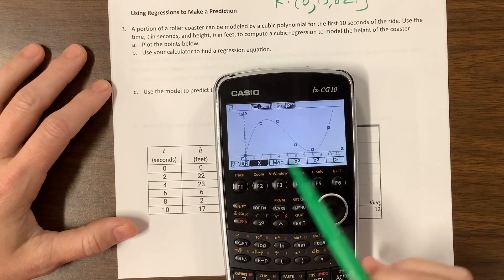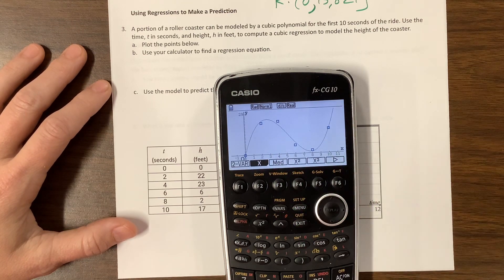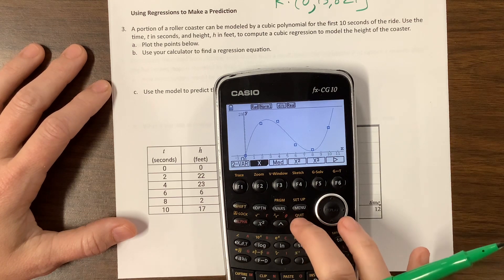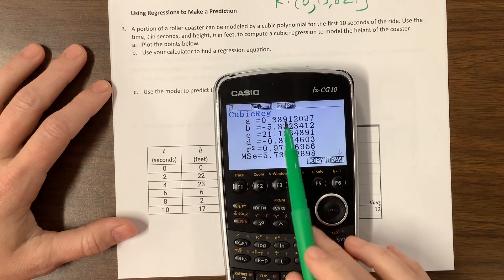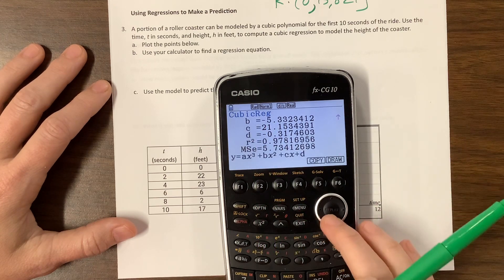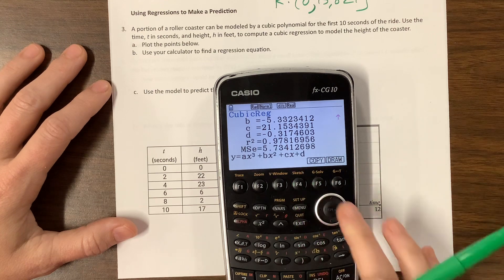So you can kind of see there's a few things that are off that graph. I can come back and... Well, I can do this cubic regression again. Here's the a value, so it's this. So if you scroll down, you can see that it's ax cubed plus bx squared plus cx plus d.